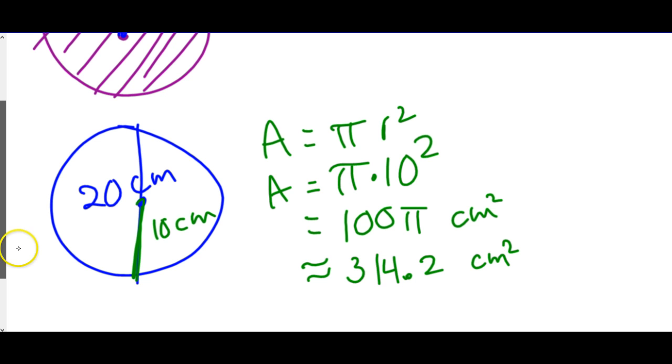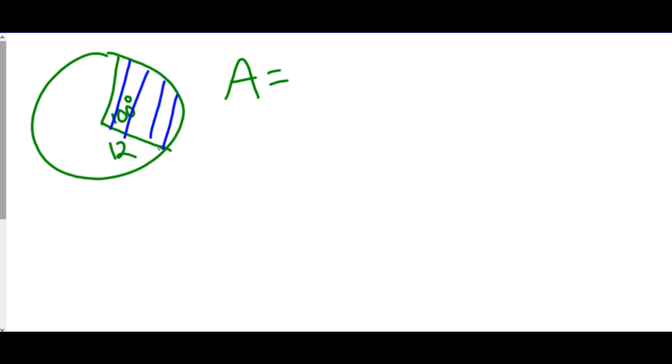We can also find just a slice on the circle. Let's say we have a circle, and we want to find just the area of that piece. Let's say it's 100 degrees for the angle inside. And let's say we have a radius of 12.